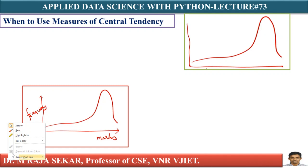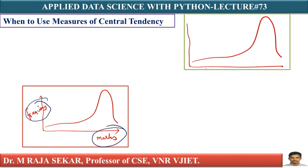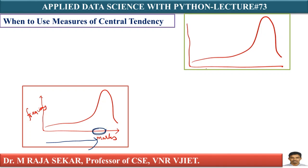On the x-axis, let me take marks. On the y-axis, let me take frequencies. Then what happens? There are more number of students who have got higher marks. If I go along the x-axis from left to right, marks are increasing. Means here there are more marks, and this height — this frequency — is also very high.